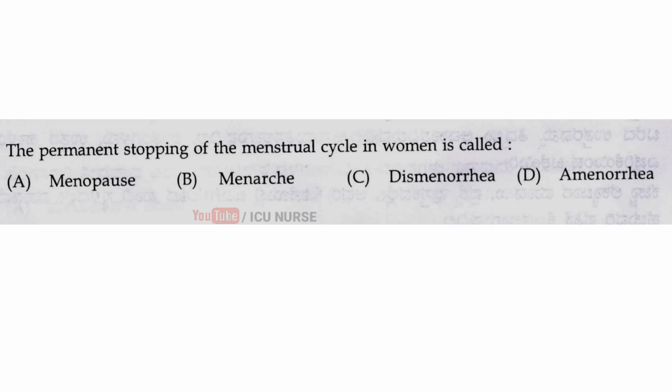The permanent stopping of the menstrual cycle in women is called — the correct answer is A — menopause.